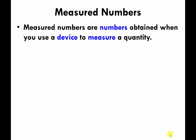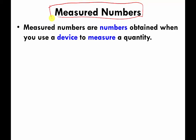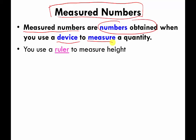We're still talking about making measurements. What I want to talk to you now about is something called a measured number. Measured numbers are numbers that you get when you use a device to make a measurement. An example is if you use a ruler to measure height — the ruler is a device, and the number that the ruler gives you is called a measured number. I told you that I was about 71.5 inches tall. This 71.5 is a measured number because I got it by using a device called a ruler.